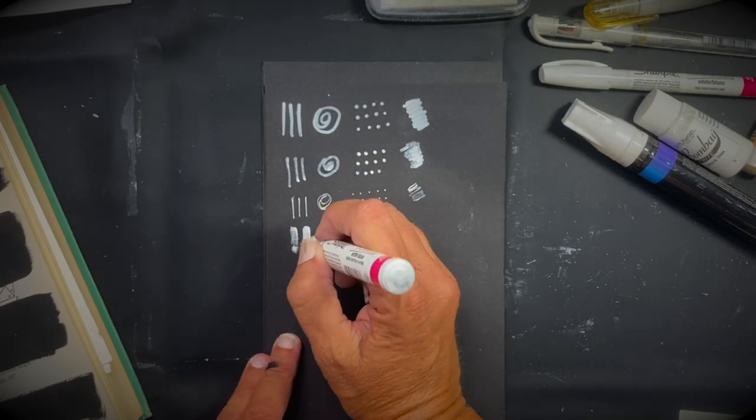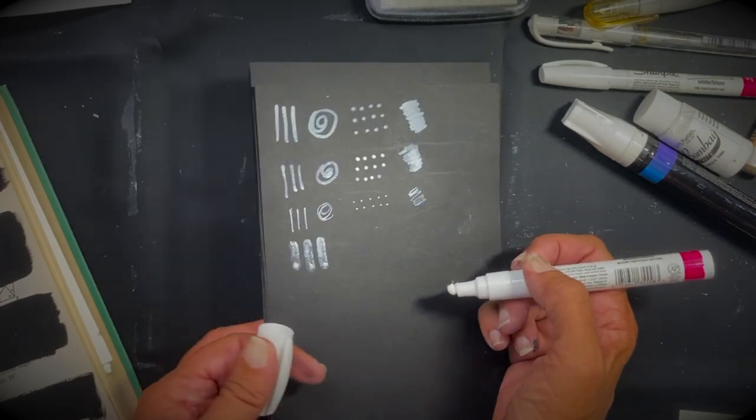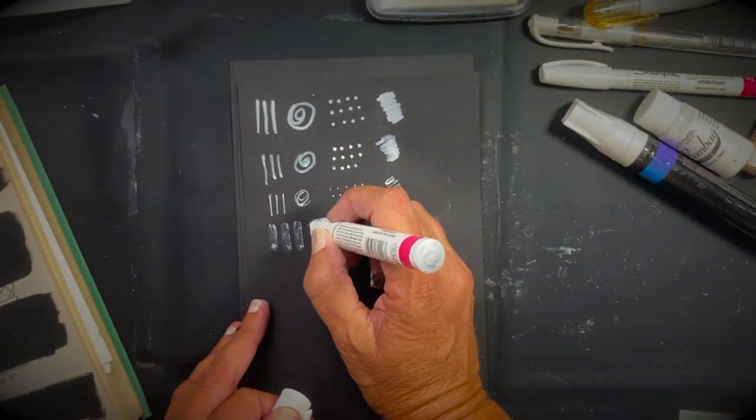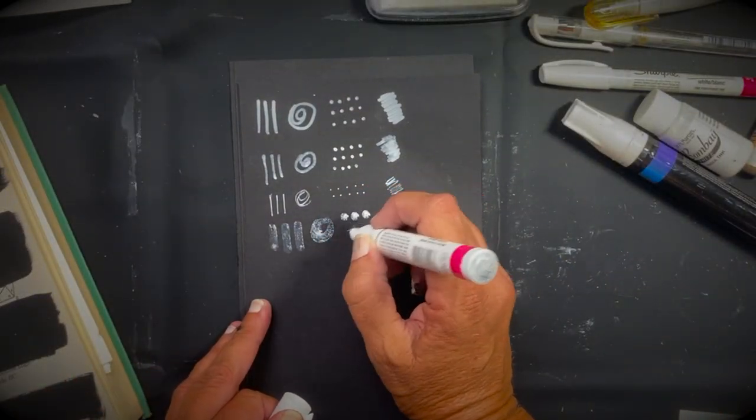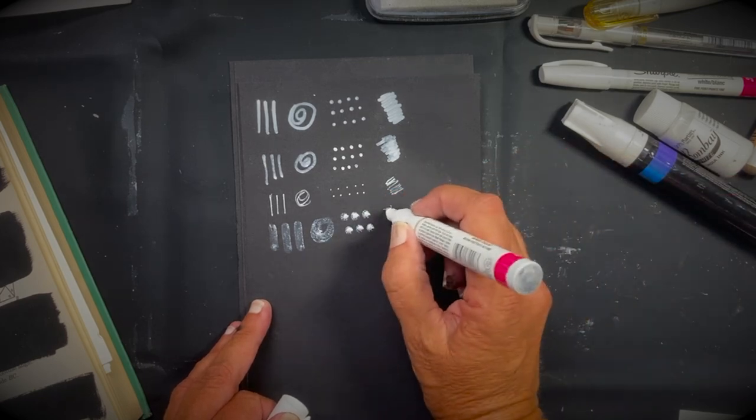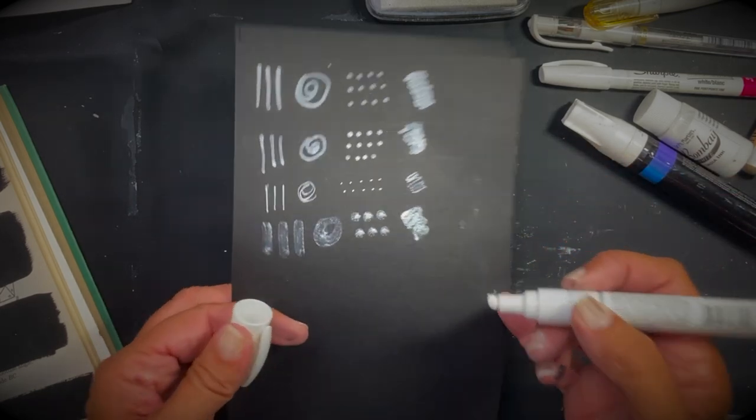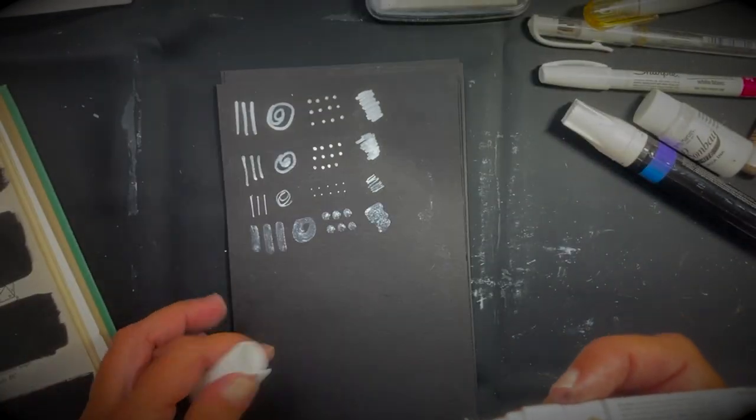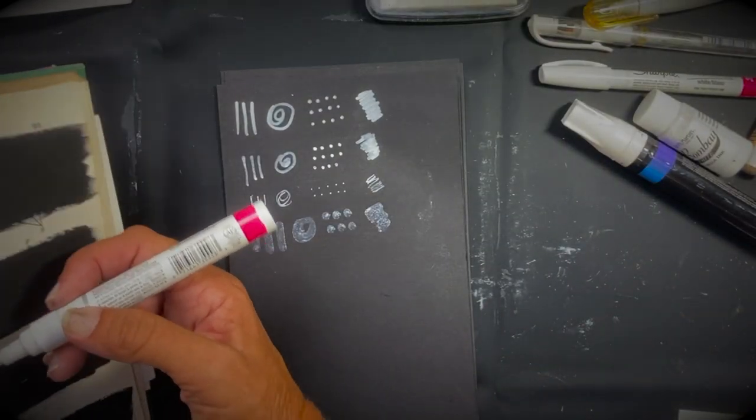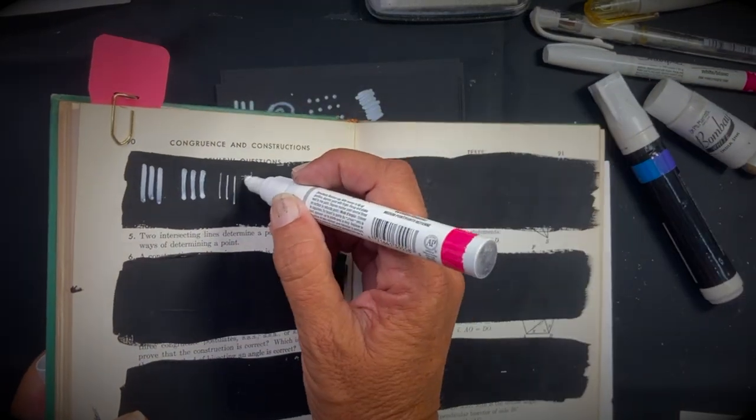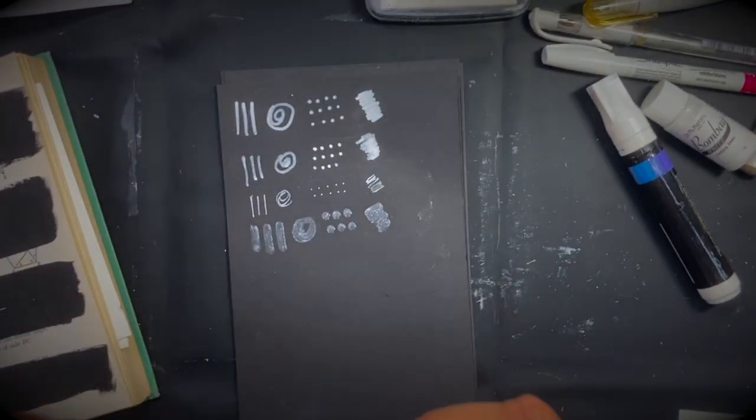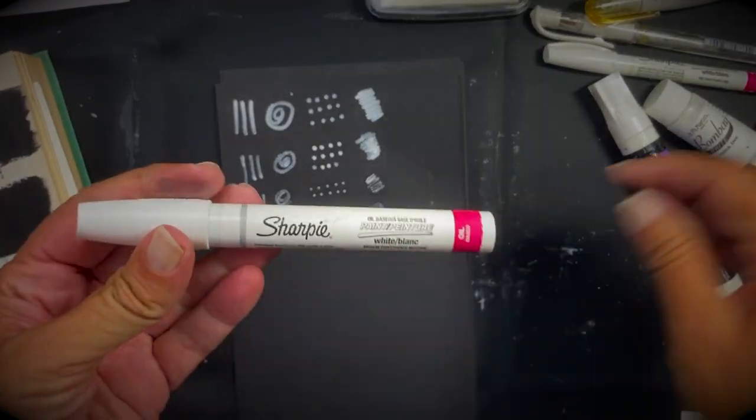You can see it almost evaporates as it goes down. This is an older oil paint pen. And you can see it's not holding up real well. Do it on the gesso as well. We'll see how that dries. All right. So that's the Sharpie brand.